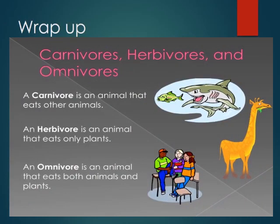Let's wrap up today's lesson on carnivores, herbivores, and omnivores. In this lesson we have learnt that a carnivore is an animal that eats other animals, a herbivore is an animal that eats only plants, and an omnivore is an animal that eats both animals and plants.